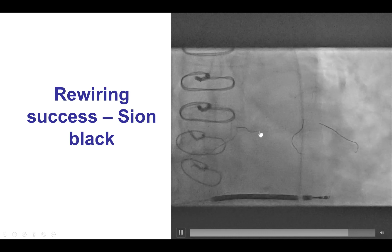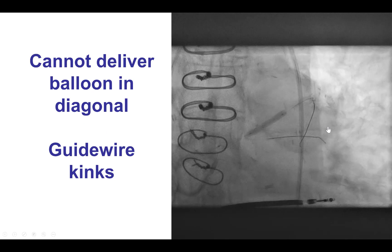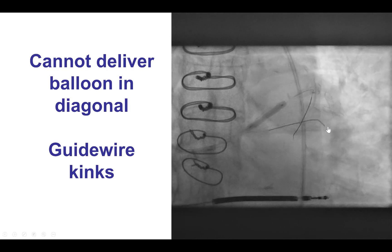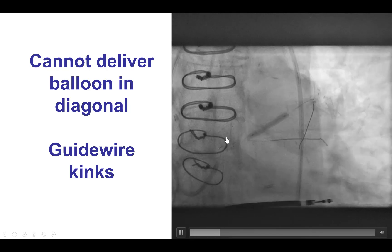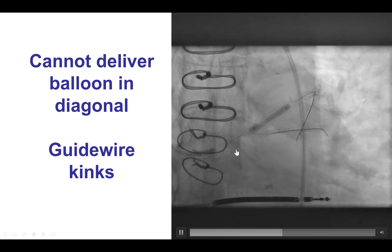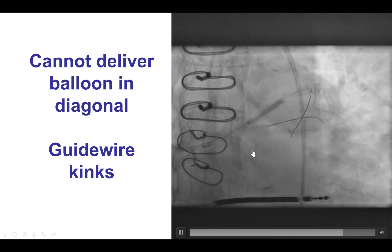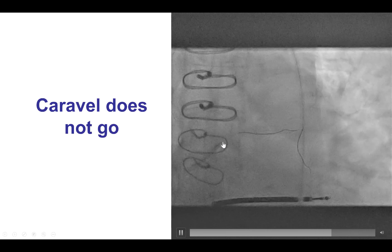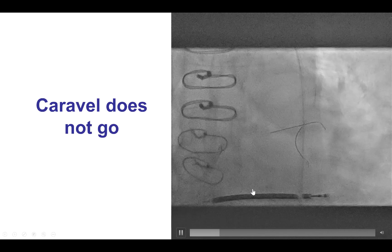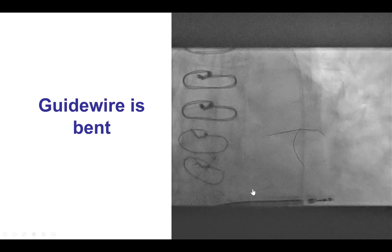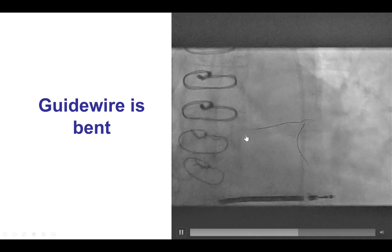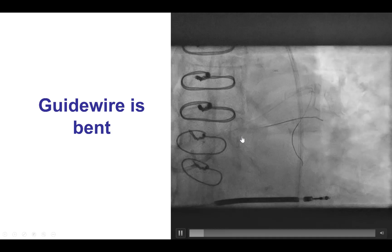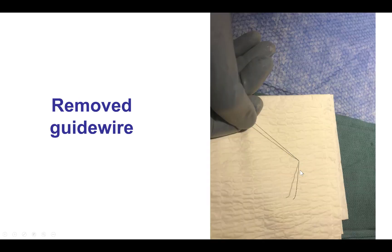It is good to have the previous wire in place as a marker of the course of the vessel. We were eventually able to deliver a balloon in the LAD, then tried to deliver a balloon into the diagonal to do the first kissing balloon inflation, but could not get the balloon into the diagonal. On close inspection, there was a kinking of the diagonal guide wire. We tried to use a microcatheter to salvage the situation but were unable to advance it. Eventually, we had to remove the wire, and we could see there was a huge loop all the way into the left main. After removal, indeed there was a significant kink in the guide wire.